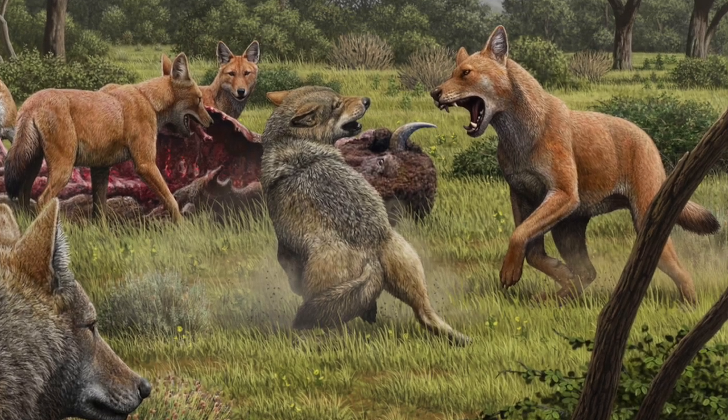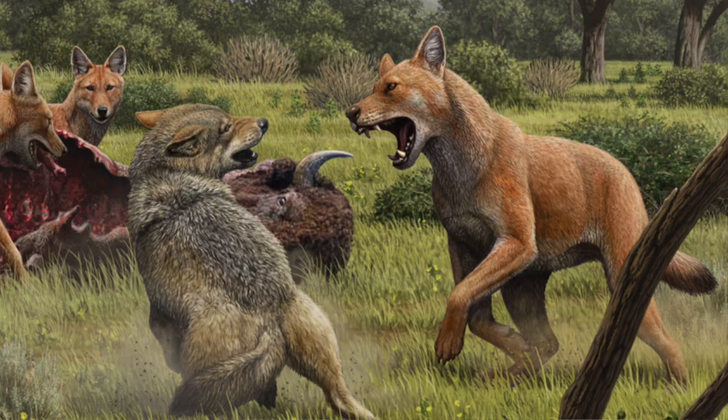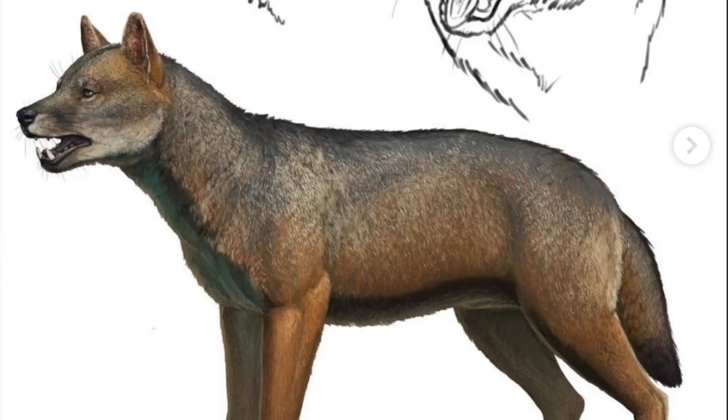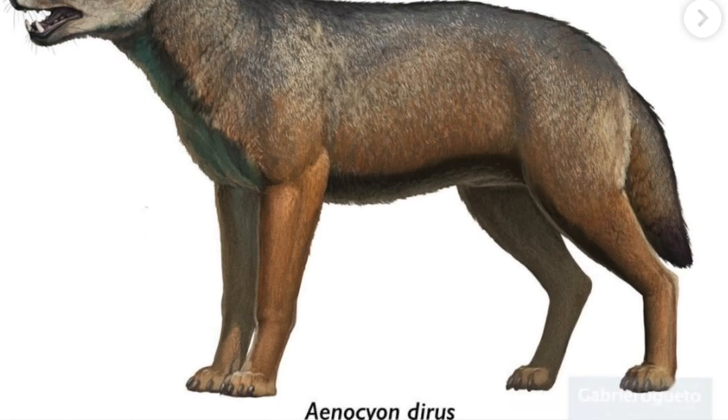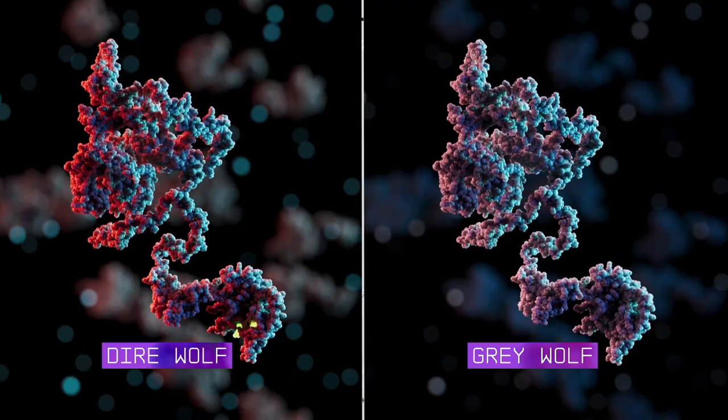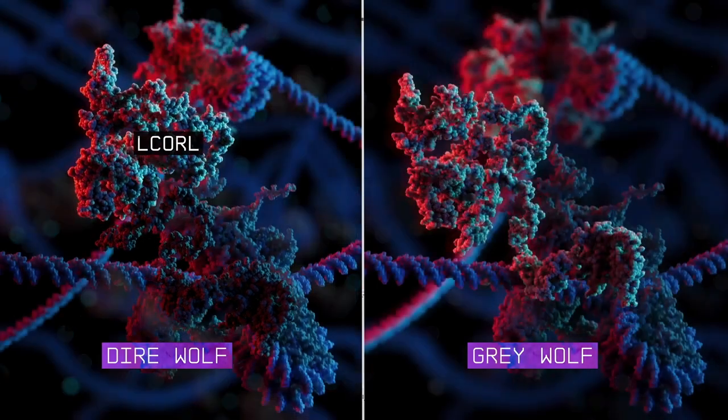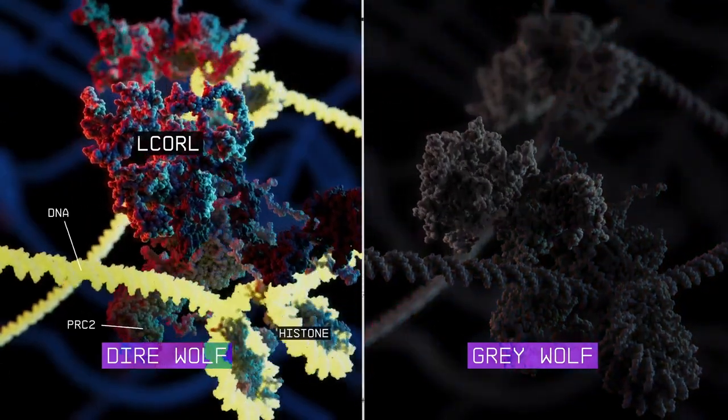Now direwolves are an ancient species that's in a different genus than the wolves and dogs of today which are in genus Canis, whereas direwolves are a separate genus Aenocyon. Today there are no living members of Aenocyon left. However, we do have several samples of them, the most famous of which being from the La Brea Tar Pits in LA. And the scientists at Colossal actually did start with genuine ancient direwolf DNA samples that they got from two different specimens.